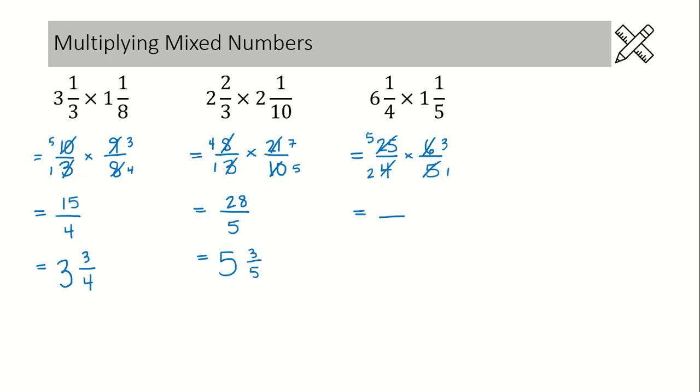Now we can multiply straight across. 5 times 3, that's 15. And 2 times 1 is 2. Once again, we have this improper fraction. We need one more step to change it to a proper mixed number.